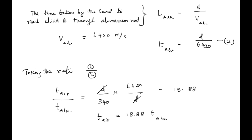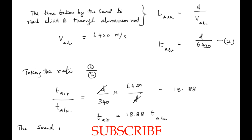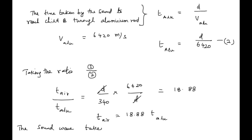As a conclusion, the sound wave takes 18.88 times more time through air than through aluminium to reach child B — meaning sound is 18.88 times slower in air than in aluminium.